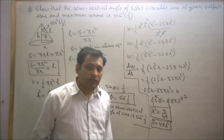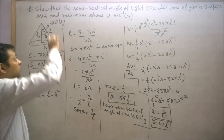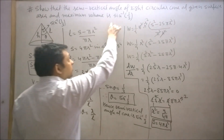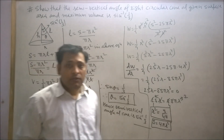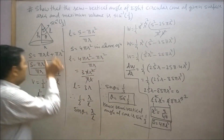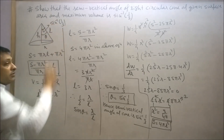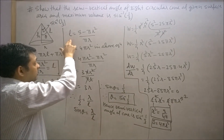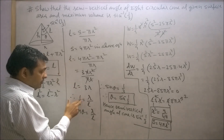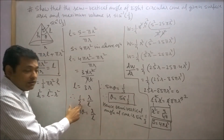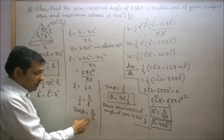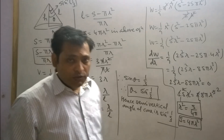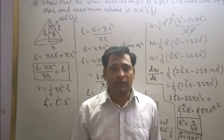My strategy to solve this question was to change h (small x) in terms of l and r, since we need the semi-vertical angle in terms of sin⁻¹, and sin θ = perpendicular/hypotenuse = r/l. I established the relationship r/l = 1/3, so sin θ = 1/3 and θ = sin⁻¹(1/3). Keep watching my videos and keep practicing. Thank you, take care.